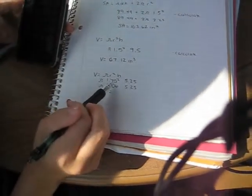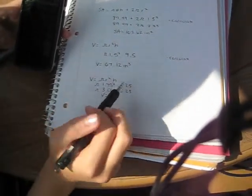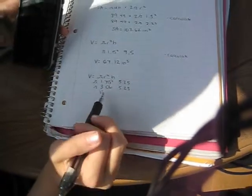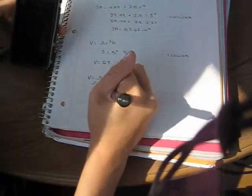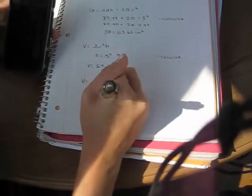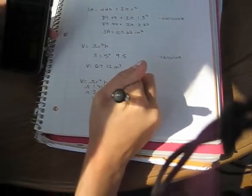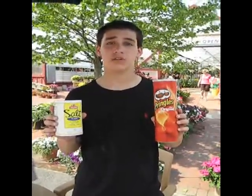Since the radius is 1.75, you plug that in. And since the height is 5.25, you plug that in. After calculating, the volume of the cylinder is 50.44 inches cubed. After calculating, the Pringles has a bigger volume, which means it holds more than the salt container.